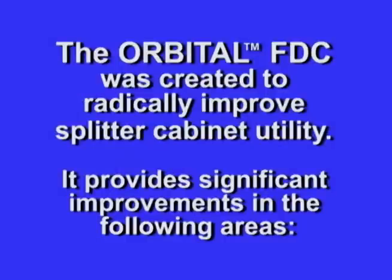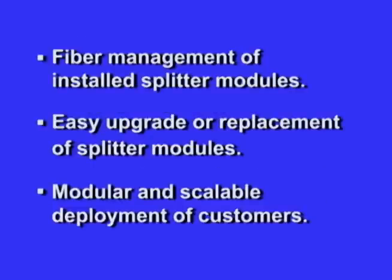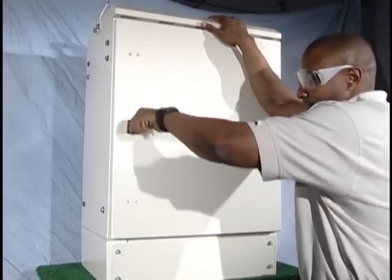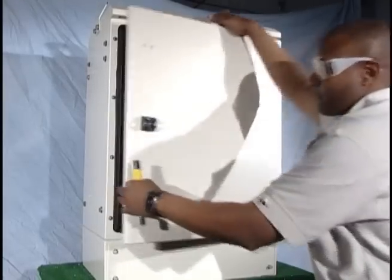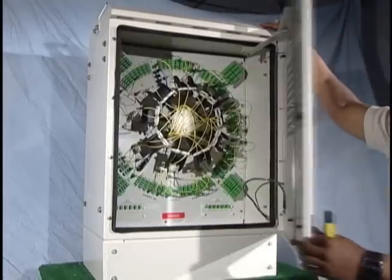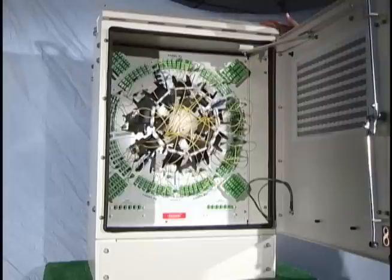The Orbital Cabinet was created to radically improve splitter cabinet utility. It provides significant improvements in the following areas: fiber management of installed splitter modules, easy upgrade or replacement of splitter modules, and modular and scalable deployment of customers. The Orbital 288 fiber distribution cabinet offers a revolutionary circuit provisioning platform and fiber to the premise networks.